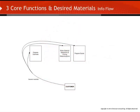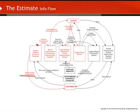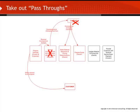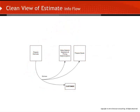The desired materials will now flow from the customer to three core functions: prepare estimate, make material selections and pricing determinations, and prepare quote. The administrative assistant simply moves information about the estimate from a physical form to a logbook — this pass-through step and the logbook can go away. Let's look at a clean view of the estimate flow. The estimate flows to the customer, as well as to the core functions of make material selections and pricing determinations, and prepare quote.